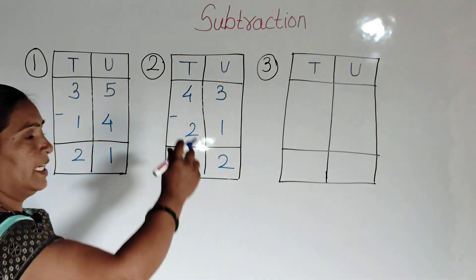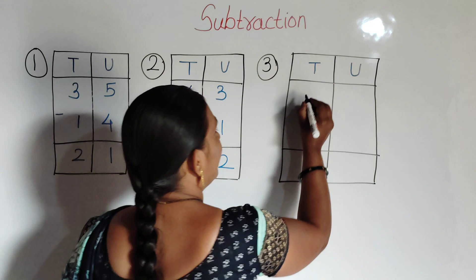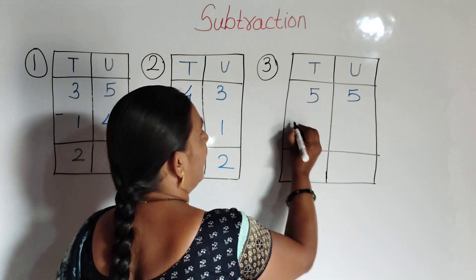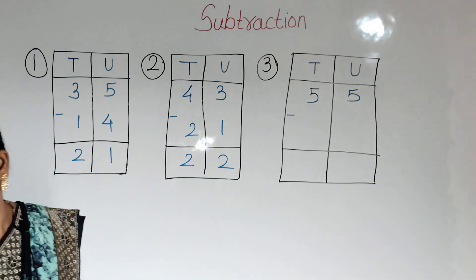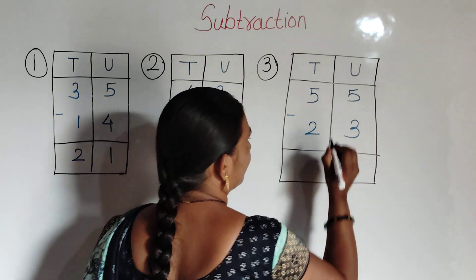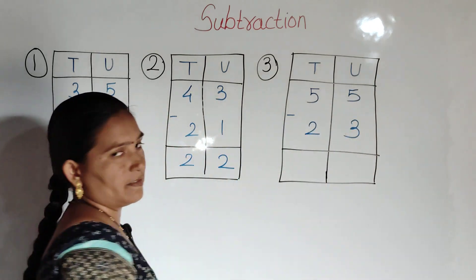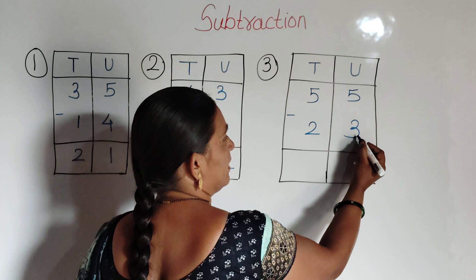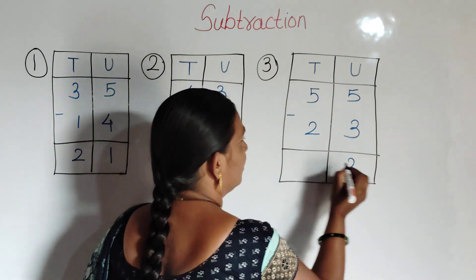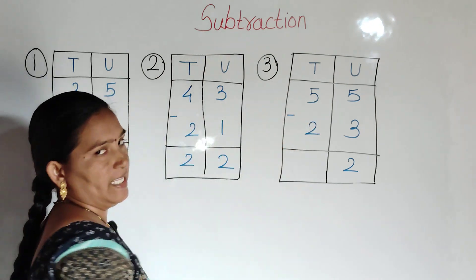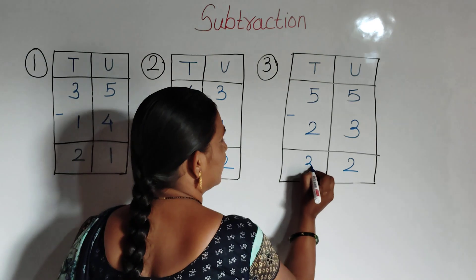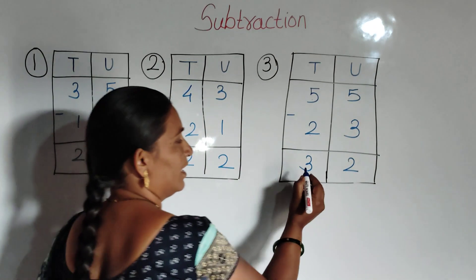Third example: 55 minus 23. First, units place: 5 minus 3 is equal to 2. Then tens place: 5 minus 2 is equal to 3. So the answer is 32.